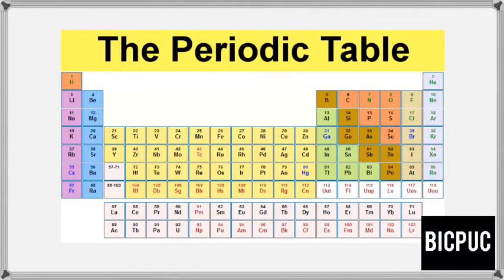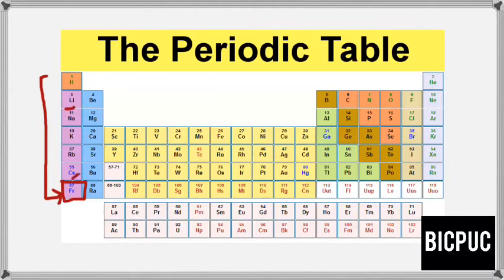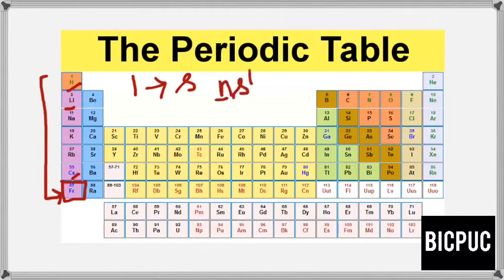Alkali metals constitute Group 1 of the s-block. The actual alkali metals range from lithium to francium, of which francium is radioactive in nature. So we are going to focus only from lithium to cesium. Including hydrogen, these elements contain one electron in their valence shell, present in the s-orbital, so their electronic configuration ends with ns¹, where n is the number of the valence shell — 1, 2, 3, 4, up to 7.